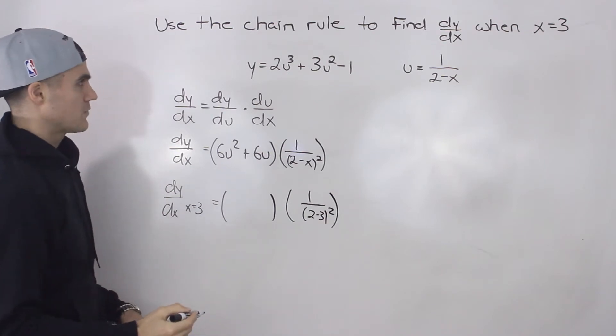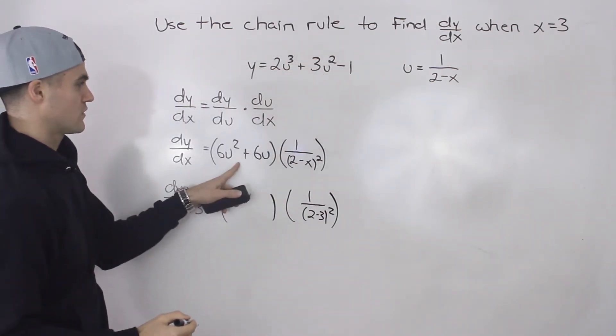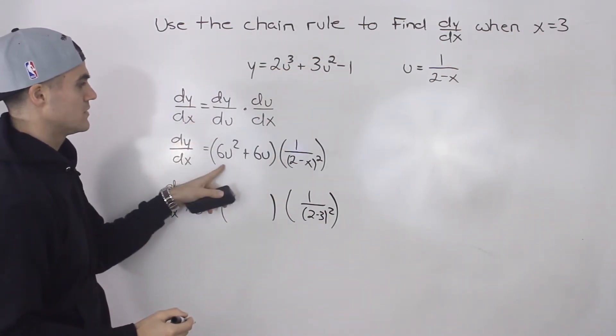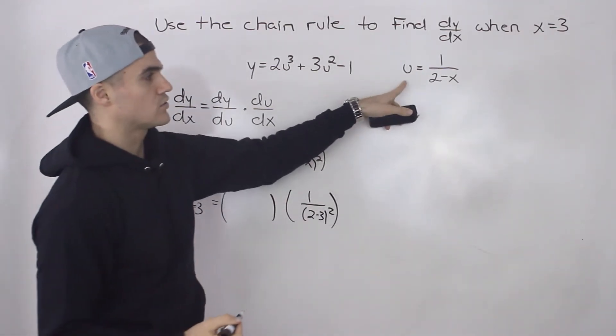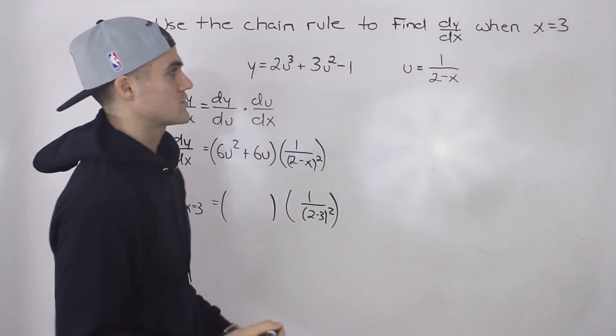So we can plug in 3 into this expression. So 1 over 2 minus 3 squared. However, notice that we can't plug this x value of 3 for this expression, dy/du, because it's in terms of u. So what we have to do is we have to find what the u value would be when x is 3.